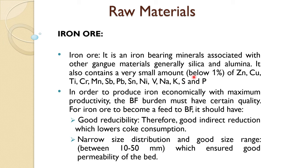In order to produce iron economically with maximum productivity, the blast furnace burden must have certain quality. So for iron ore to become a feed to the blast furnace, it should have the following qualities. One is good reducibility, which means it should have a good indirect reduction, which lowers the coke consumption. This is very important.